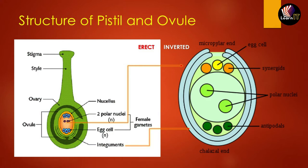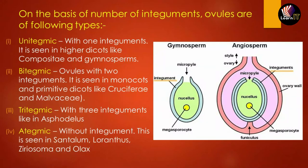The ovule has two ends. The open side is known as the micropylar end, from which the pollen grains or the male sex gametes will enter. On the other side is the chalazal end. Going inside, it has basically eight cells: three cells on the top are known as egg cells, three cells on the bottom are known as antipodal cells, and in between there are two cells which are known as polar nuclei.